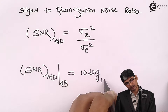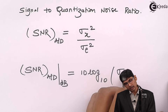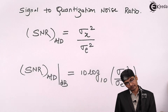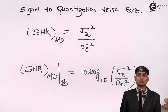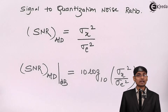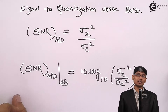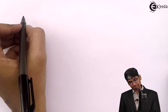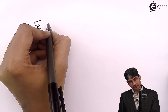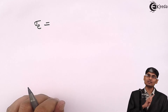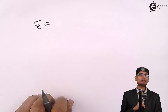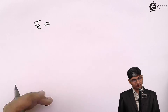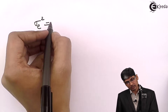SNR of an A to D converter in dB is given as 10 log base 10 of sigma_x² divided by sigma_e². Here, sigma_x² is the variance of the input random process, and sigma_e² is the variance of the noise process. If we consider it to be wide sense stationary and uniformly distributed, the variance sigma_e² is delta² divided by 12.